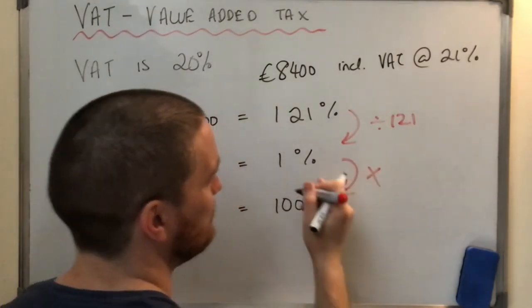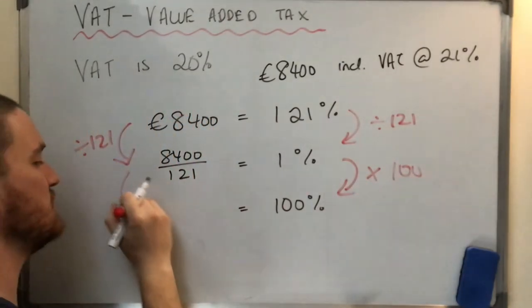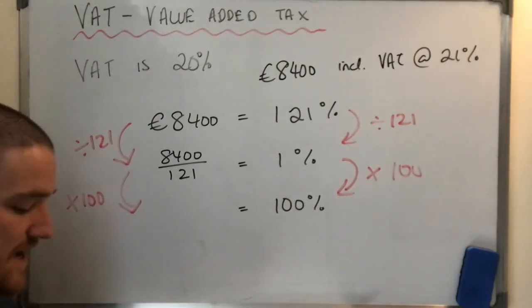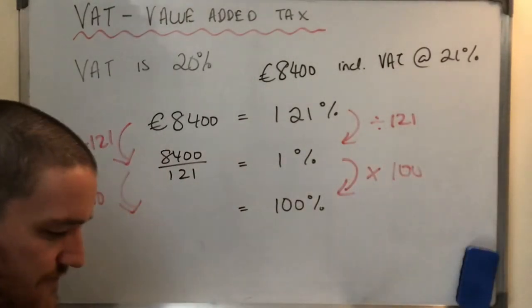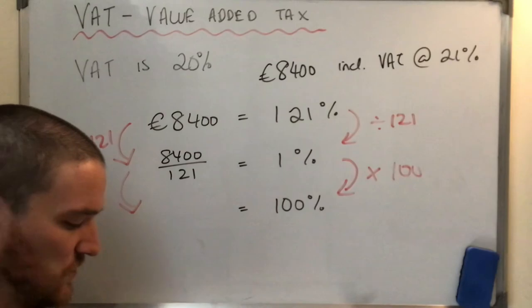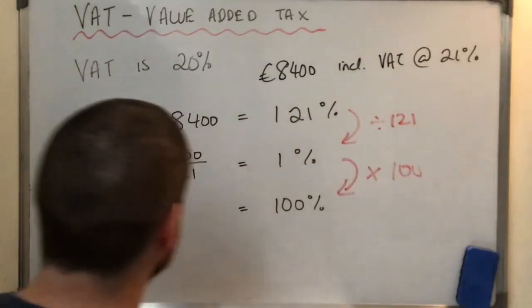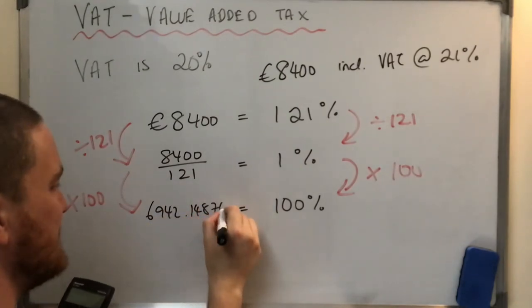So 121 to 1 is going to be divided by 121. If I divide the right, I have to do the same on the left. So this becomes 8400 over 121. And again, I wouldn't bother solving that. I would just leave it there until the next step. Here, to get from 1% to 100, I times by 100. If I do that on the right, I have to repeat it on the left. So now I put it in the calculator. So 8,400. Oops, that's 5,000. 8,400 divided by 121, multiplied by 100. And I end up getting, ooh, it's an ugly looking number.